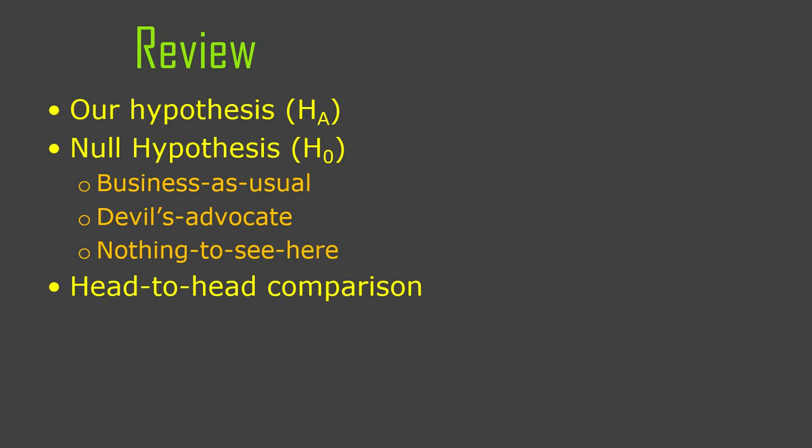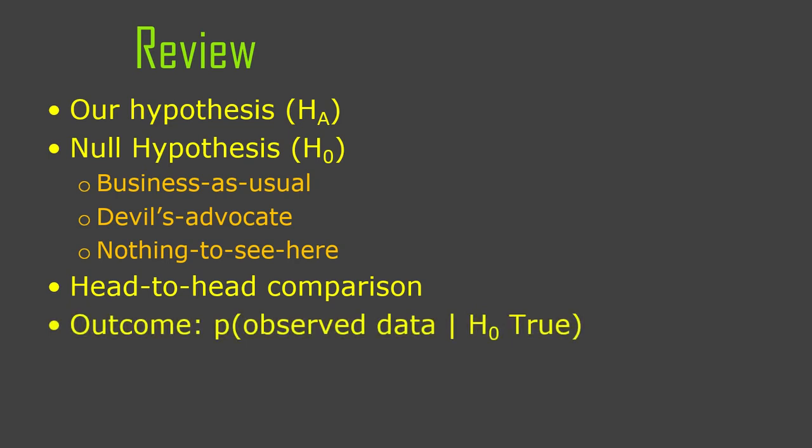Then you compare them head to head — the alternative hypothesis versus the null hypothesis. The outcome is a p-value. That p-value is the probability of obtaining the data that was actually observed if the null hypothesis is true — the probability of the data given the null. We have to remember it's the data or more extremely different from the null expected value, so it's a range.